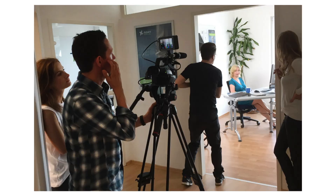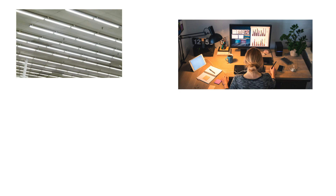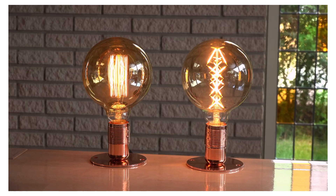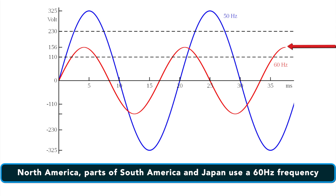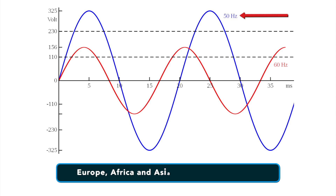Let's begin by discussing why the flicker occurs when shooting video with your camera where there are artificial lights being used. The artificial lights at your shoot location, such as fluorescent lights, computer monitors, lamps, LED screens and much more, are not continuously on as our eyes might lead us to believe. Instead, they turn on and off at a certain frequency. Different countries use different frequencies. All of North America, parts of South America and Japan use a 60 Hertz frequency, while in Europe, Africa and Asia they use 50 Hertz.